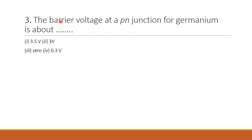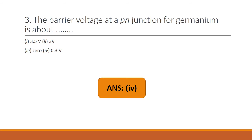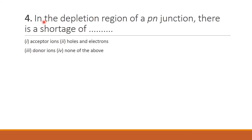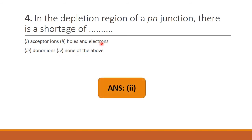Next question: The barrier voltage at a PN junction for germanium. For silicon it is 0.7 volt, and for germanium it is 0.3 volt — answer is option 4. Next question: In the depletion region of a PN junction, there is a shortage of — option 2: holes and electrons — is the correct answer, option 2 is the right answer.